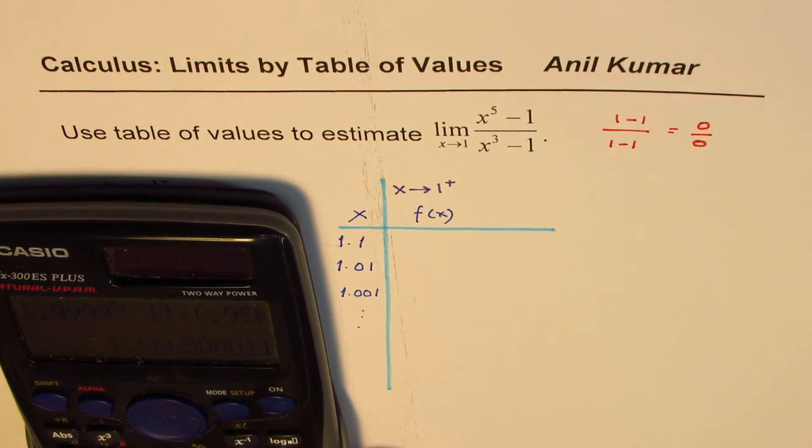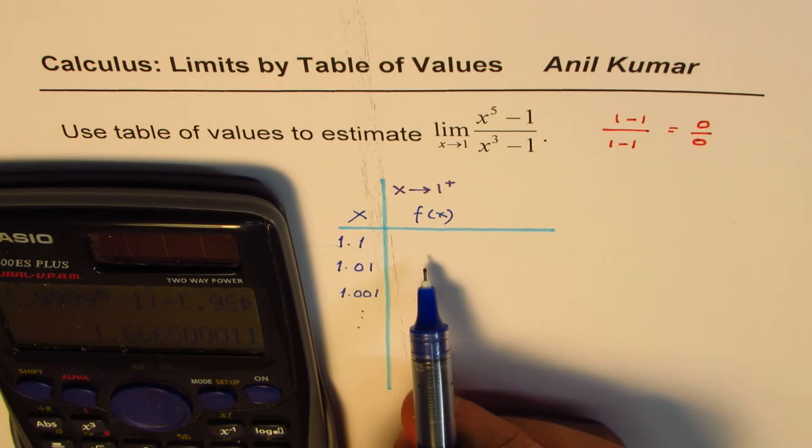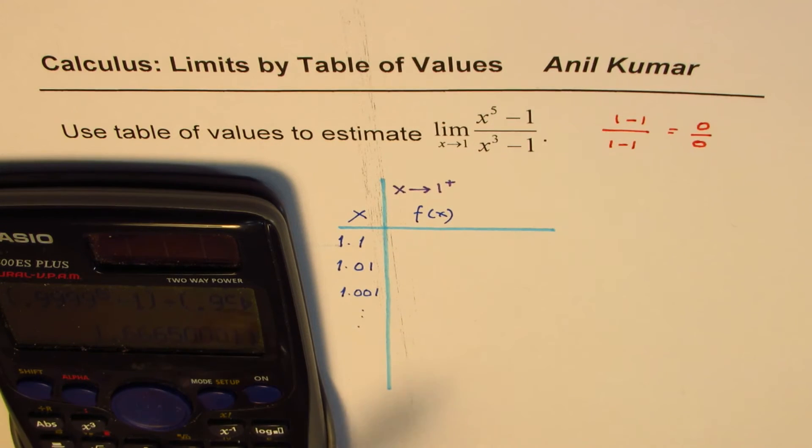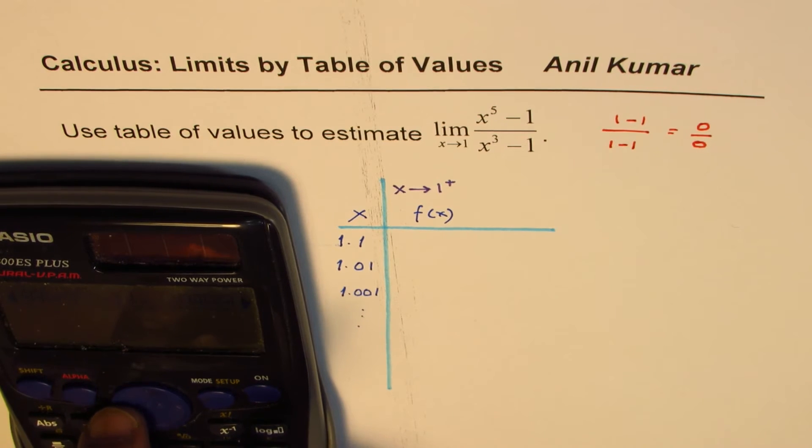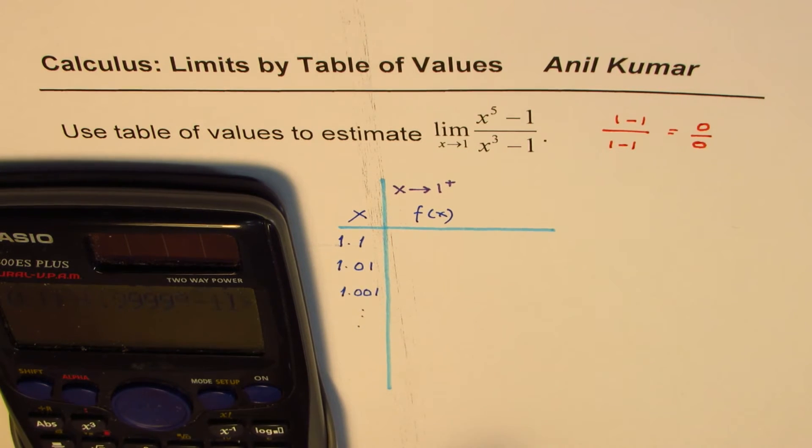Now let's see. What value do we approach when we go from the right side? That means the value is slightly more than 1. So now we'll write 1.1. 1.1 to the power of 5 minus 1. And there again we go. We'll do 1.1.